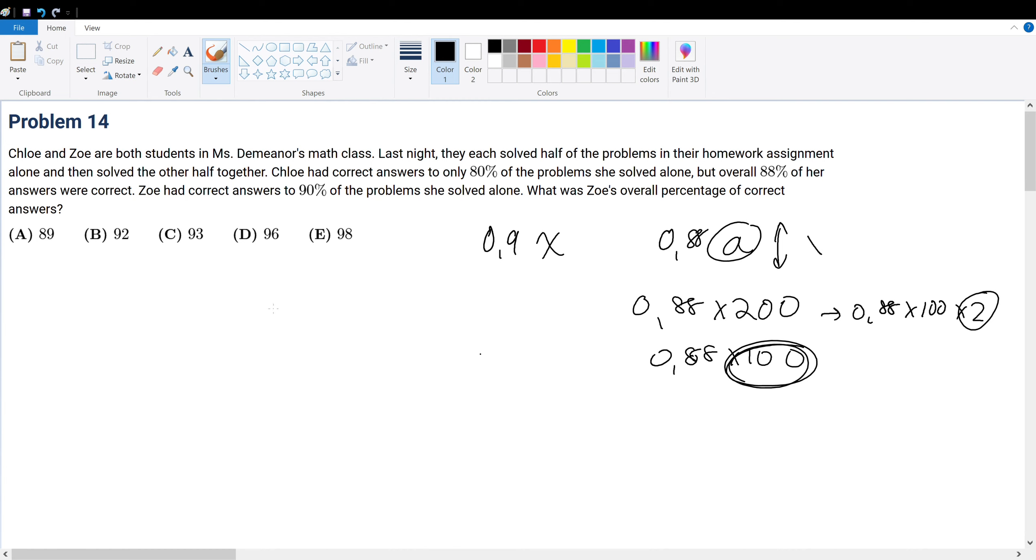Obviously 200 works, 100 would work, but 100 is easiest because we just shift the decimal two places to the right. Let's assume that when it said Chloe had 80% correct on problems she solved alone but overall 88% correct, let's assume 100 is half of the entire thing, so 200 would be the total.